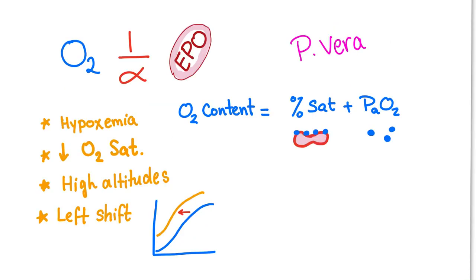So what does EPO do? It increases the number of red blood cells by stimulating the bone marrow, stimulating the factory. Hey, bone marrow, I need more RBCs, please. That's EPO's job.